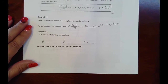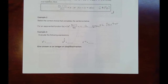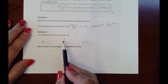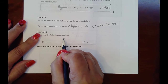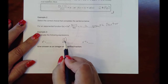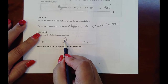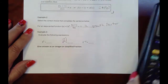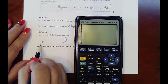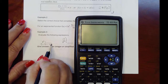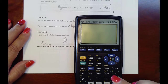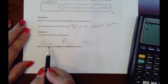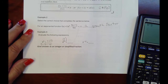Now let's practice evaluating using your calculator. If the exponent has an operation in it, wrap it in parentheses. Five to the third is five times five times five, which is 125. For eight to the two-thirds, you can enter eight raised to the power of two divided by three in the calculator.